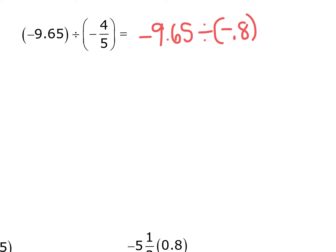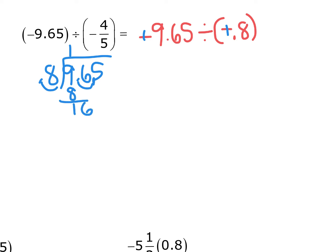In the next example we have negative 9.65 divided by negative four-fifths. Four-fifths is 0.8, and negative divided by negative gives a positive answer. So we just need to divide 9.65 by 0.8. Moving the decimal, that's 96.5 divided by 8. Eight goes into 9 once, leaving 16; 2 times 8 is 16, then bring down the 5, giving 1.10 so far.